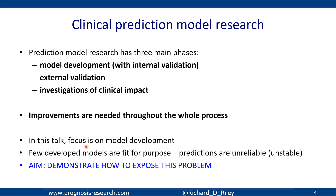Sadly, few developed models are fit for purpose — meaning that the predictions they produce are unreliable such that in new data they are not likely to perform well. A related word for this is instability. Today I'm going to demonstrate what we mean by instability, how to quantify it, and expose this problem, because I fear that many published models have this issue and it's not exposed well enough.